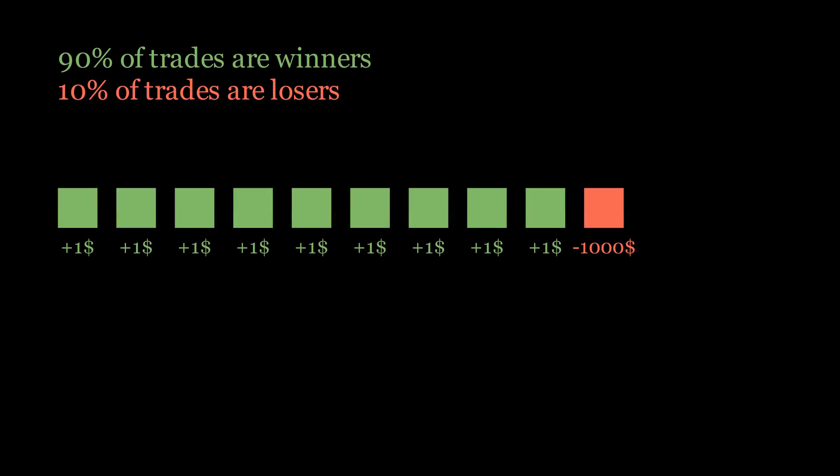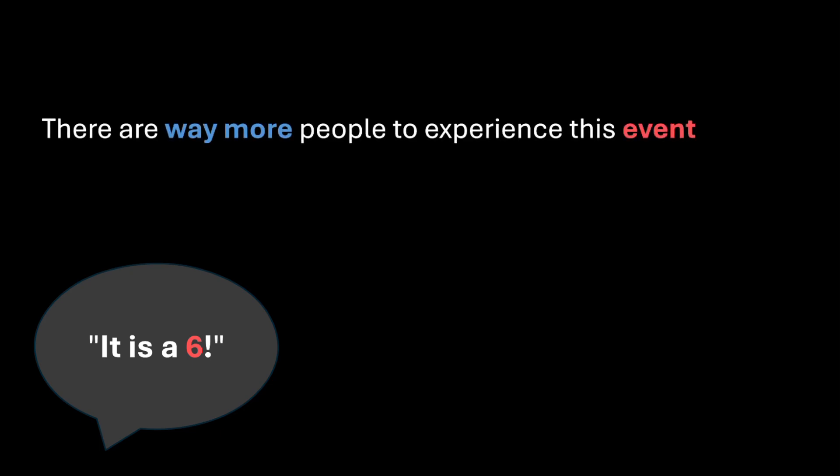The same concept applies to our killer paradox. When the bad thing happens, when the die lands on a 6, there are way more people to experience it. Just like in the trader example, when he loses, the impact is much bigger.